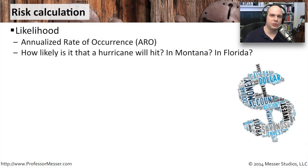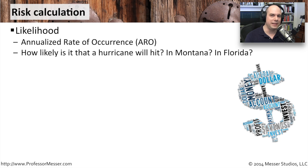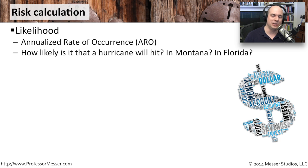It seems every week there's a news story about some type of security breach, and that news story says this security breach cost the organization $200,000 or a million dollars. So the question is, how'd they come up with that number? Because it's not just the damage done during that particular event, but also all the money spent on man hours to resolve that issue internally. There's a lot of dollars that go after the fact for cleanup, new equipment, and solving problems that occurred during that event.